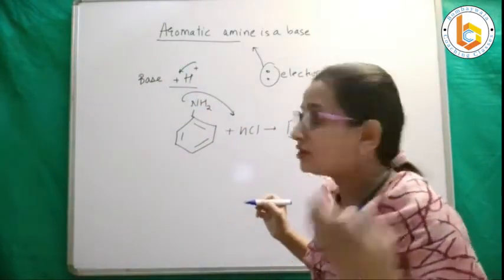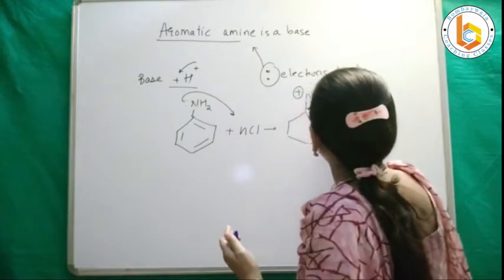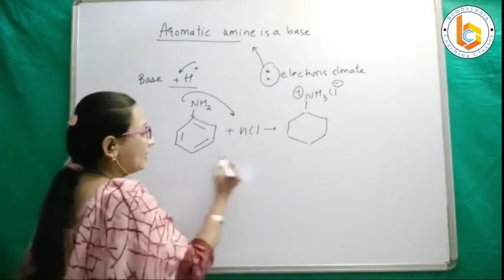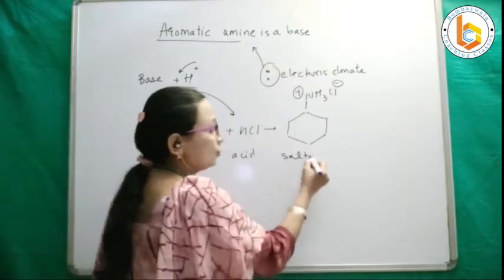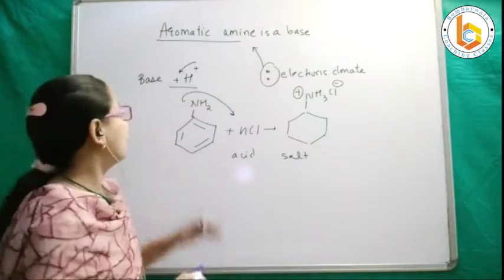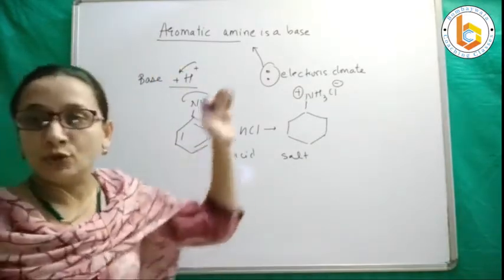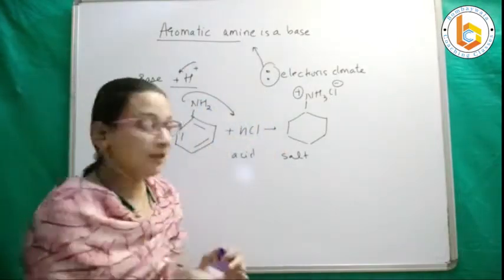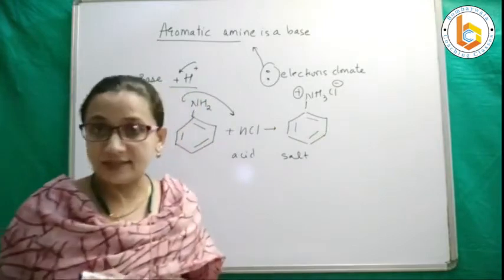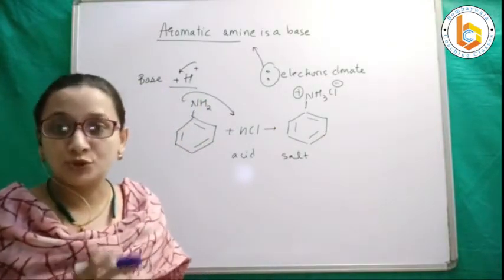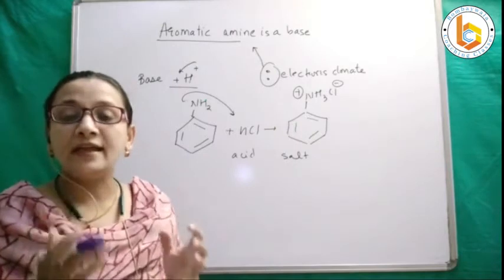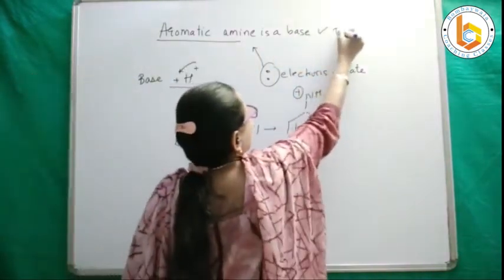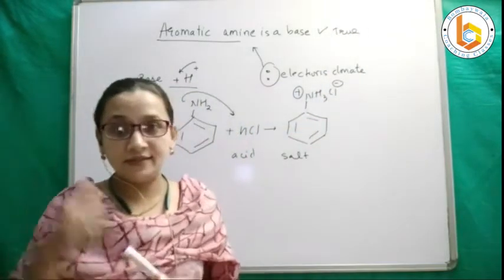When it accepts a proton, it becomes positive and it will form a salt. If a compound accepts a proton, then it is a base. Electrons donate into the base. Because it can form a salt, it can donate electrons, it can accept the proton — yes, aromatic amine is a base.